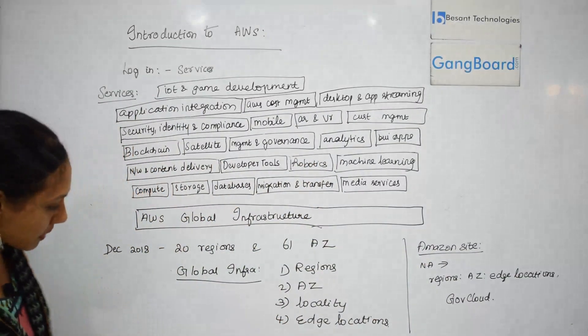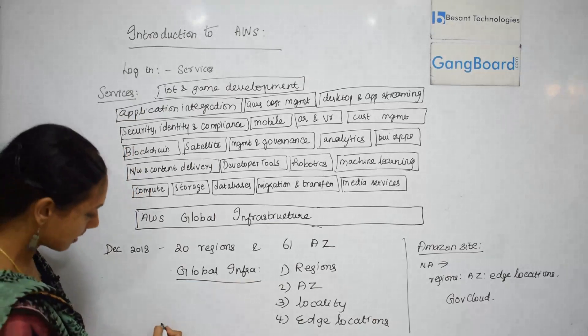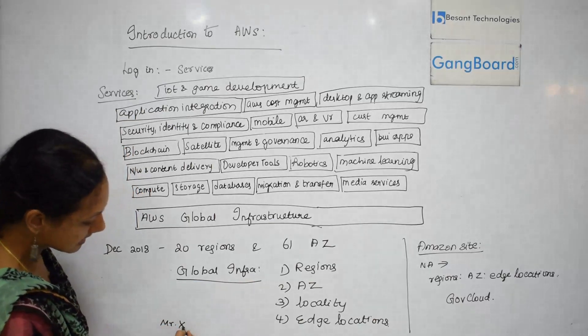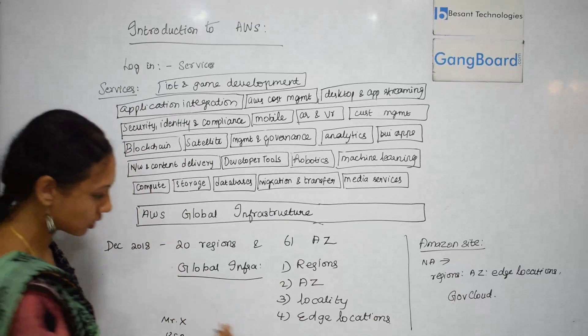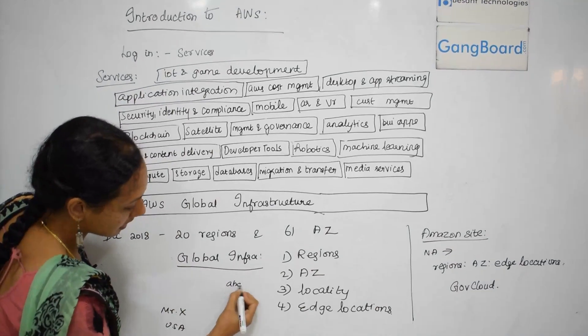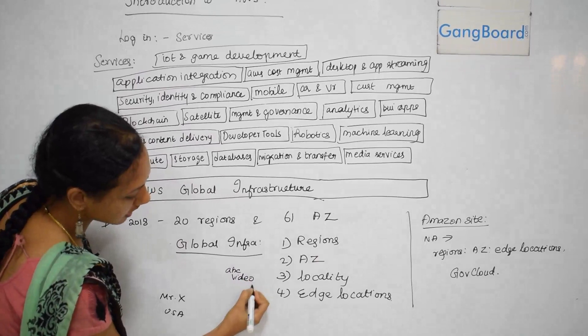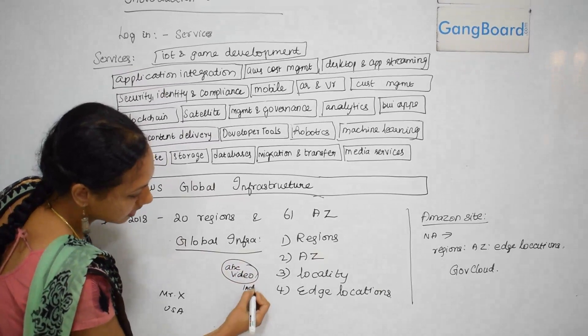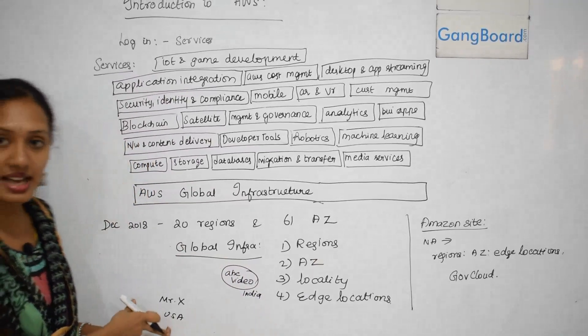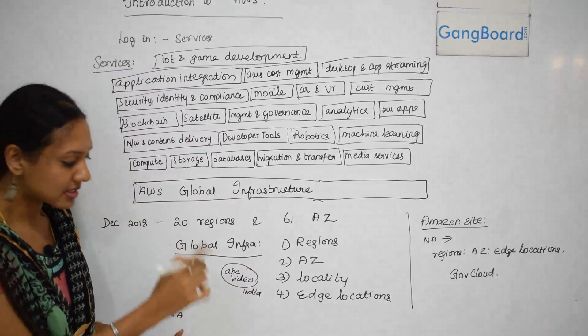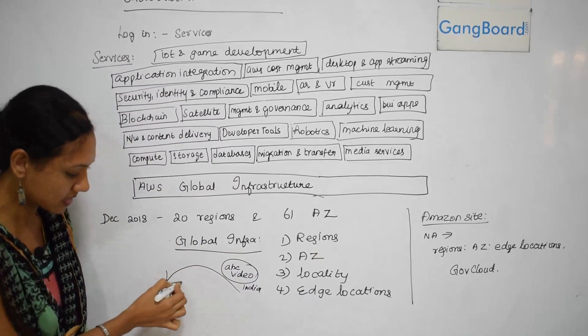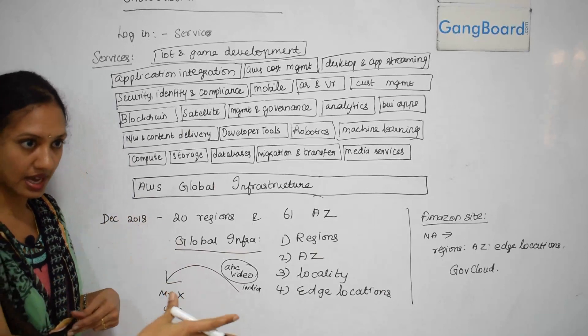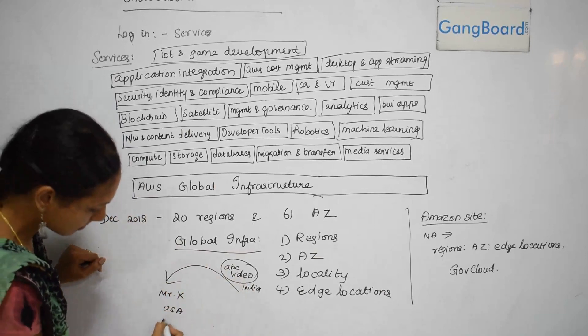Say for example, where this comes into picture: there's a person, say Mr. X, he sits in USA and he wants to download some video, say ABC video. ABC video was actually hosted in India. So what happens when he first accesses this video? First time, it has to travel all the way from India to US, so the time is going to be high.